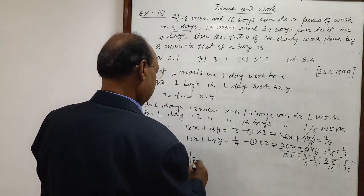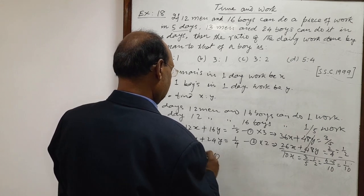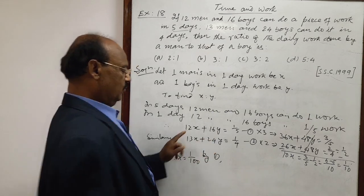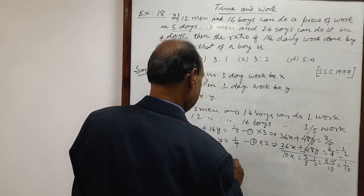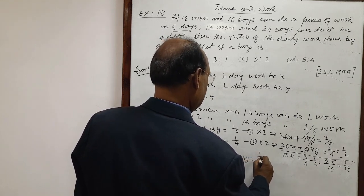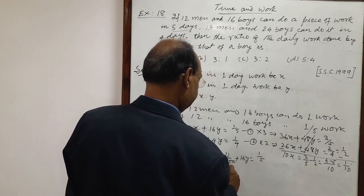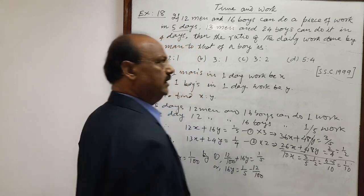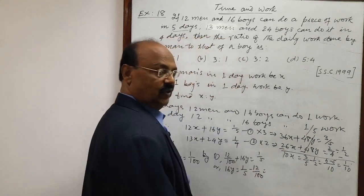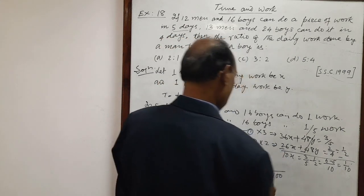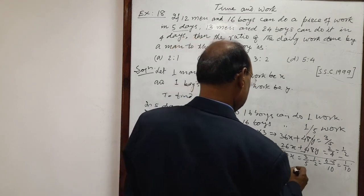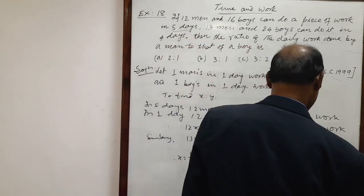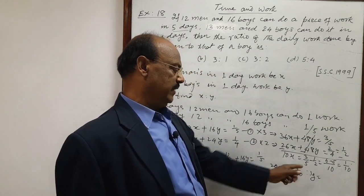So 10X equals 1 by 10, therefore X equals 1 by 100. Now using equation number 1, when we put X equals 1 by 100, we will get the value of Y. From equation number 1: 12 by 100 plus 16Y equals 1 by 5, so 16Y equals 1 by 5 minus 12 by 100. The LCM is 100, giving 20 minus 12, that is 8 by 100.